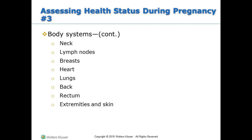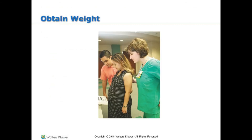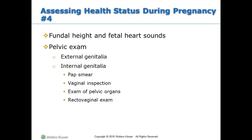Health status assessment also includes body systems: neck, lymph nodes, breasts, heart, lungs, back, rectum, and extremities and skin. Obtain weight, fundal height, and fetal heart sounds. The pelvic exam covers: external genitalia, internal genitalia, Pap smear, vaginal inspection, exam of pelvic organs, and rectovaginal exam.